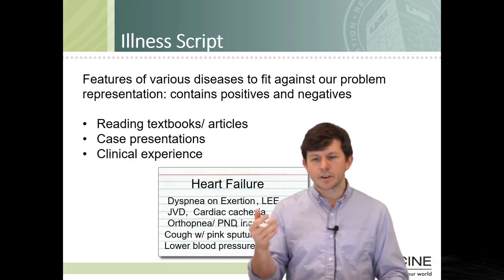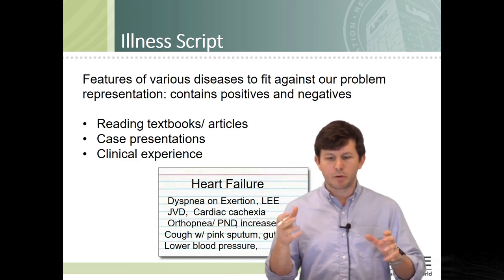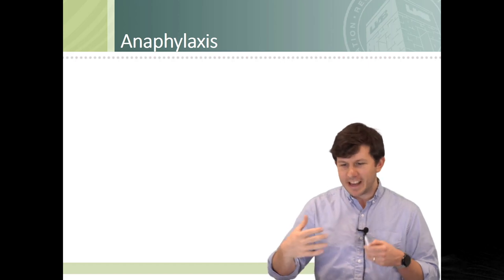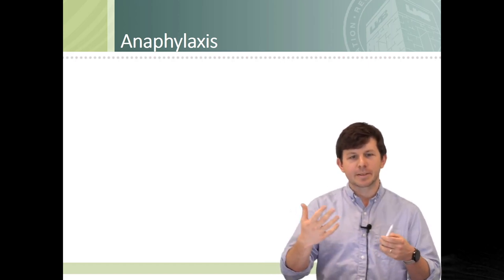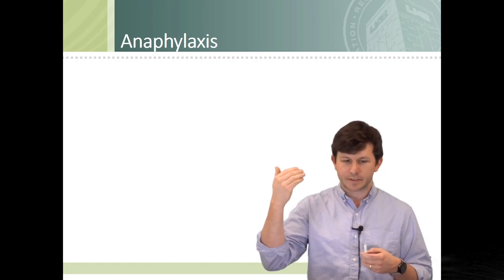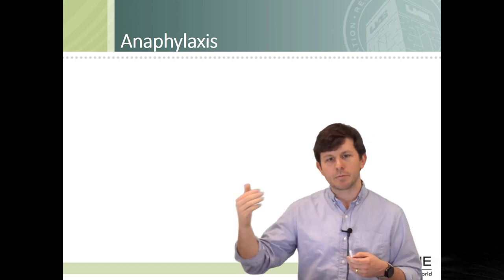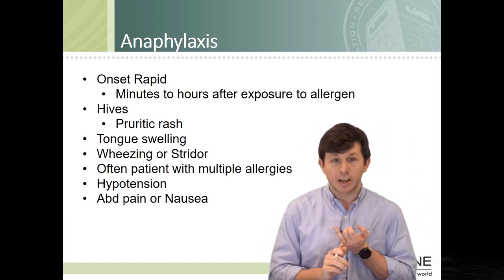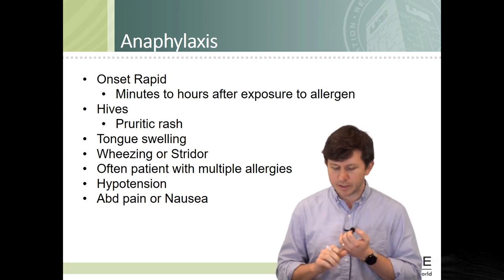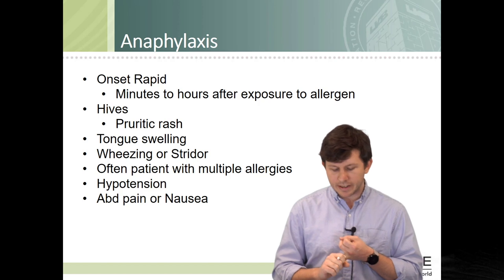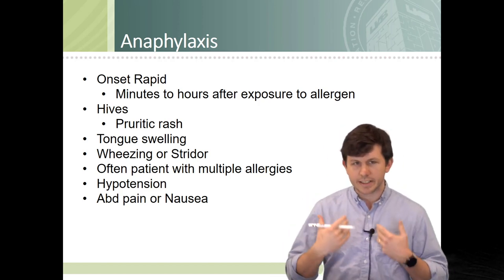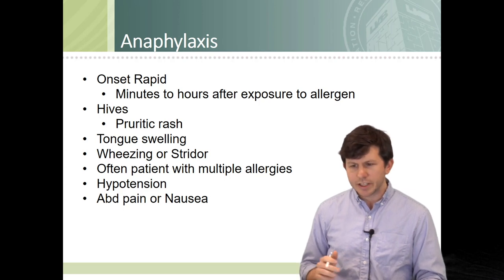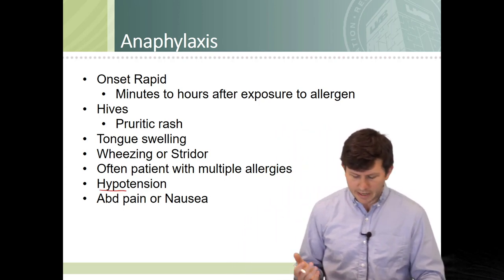So what is your illness script for anaphylaxis? I challenge you to bring things to the forefront of memory before we move forward. For anaphylaxis, I would think: it's usually pretty rapid in onset — within the first minute to a few hours. Usually they have some hives or rash, tongue swelling, wheezing, or stridor. Often you think of patients with previous or known allergies, as we saw. Their blood pressure is usually really low rather than high, and they often have abdominal pain or nausea.